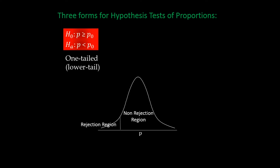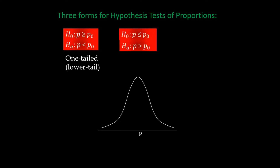The next form for a hypothesis test also has a focus on a direction, so it is also a one-tailed test. But this time the focus is on the upper tail, so it is an upper-tailed test. You can see on the distribution that the upper-tailed region is marked off as the rejection region. We know it is an upper-tailed test by looking at the alternative hypothesis — we see a greater-than sign.